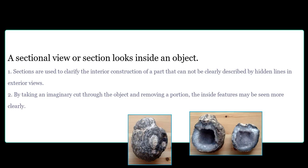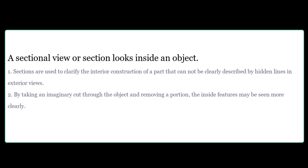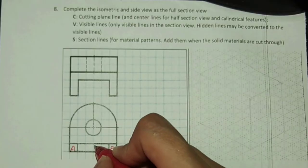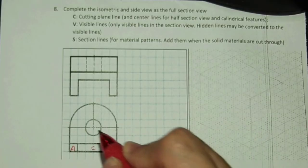Section views are used to clarify the interior construction of a part that cannot be clearly described by hidden lines in exterior views. By taking an imaginary cut through the object and removing a portion, the inside features may be seen more clearly.